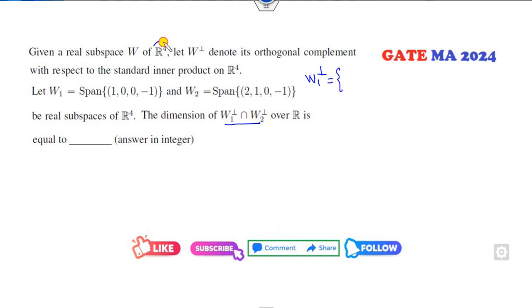Collection of all those elements in the vector space R⁴ such that the inner product of the elements of W1 with V is zero. That is the definition of orthogonal complement W1⊥.